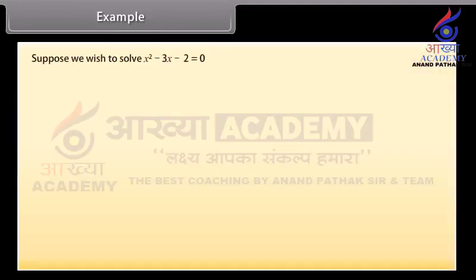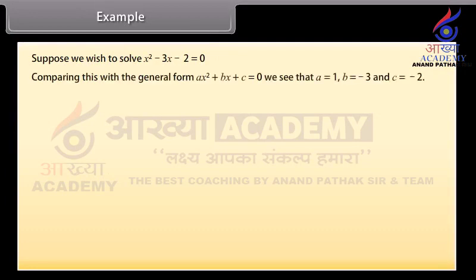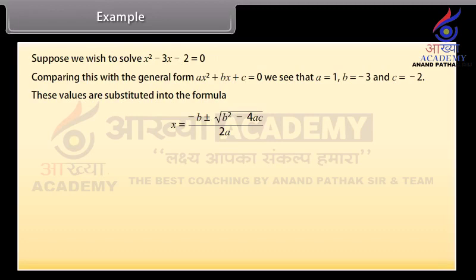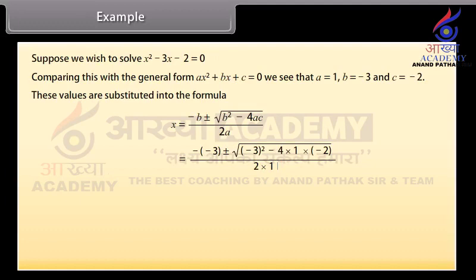Example. Suppose we wish to solve x squared minus 3x minus 2 equals zero. Comparing with ax squared plus bx plus c equals zero, we see a equals 1, b equals minus 3, and c equals minus 2. Substituting into the formula: x equals (minus b plus or minus square root of b squared minus 4ac) over 2a, which equals (3 plus or minus square root of (minus 3) squared minus 4×1×(minus 2)) over 2×1. Calculating, we get x equals (3 plus or minus square root of 17) over 2. These solutions are exact.